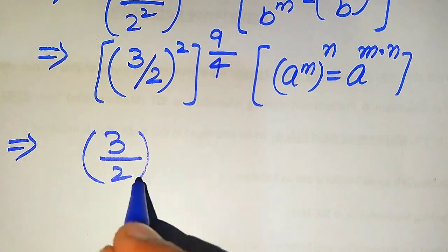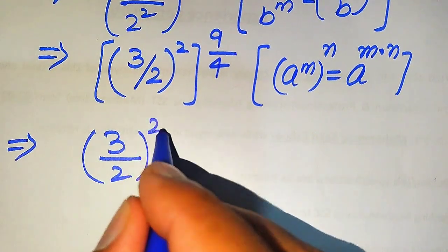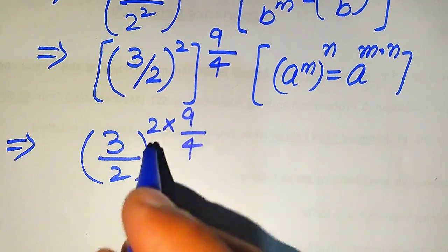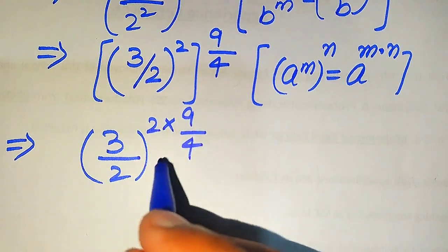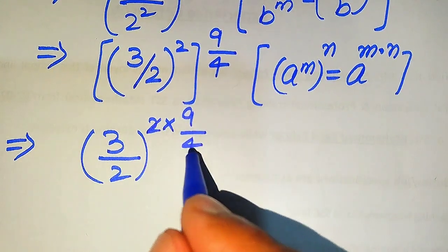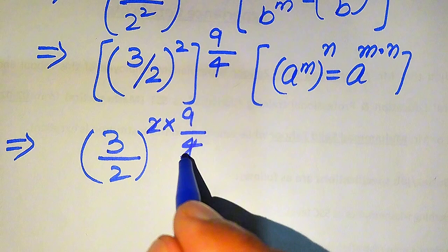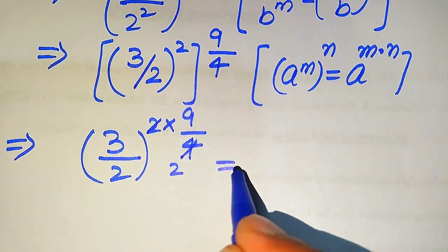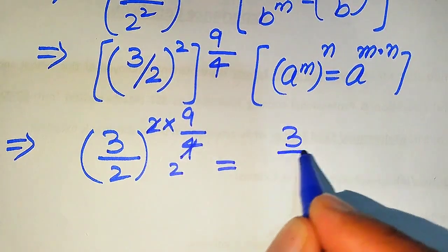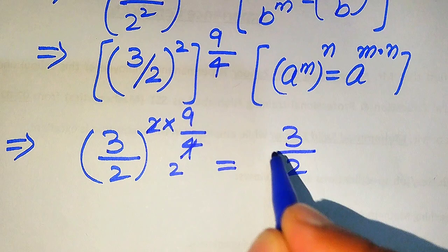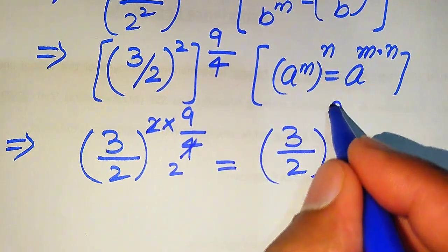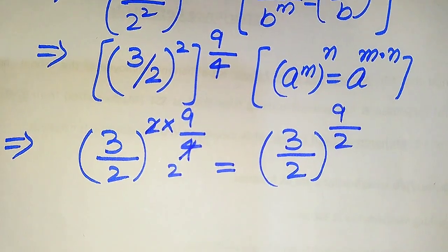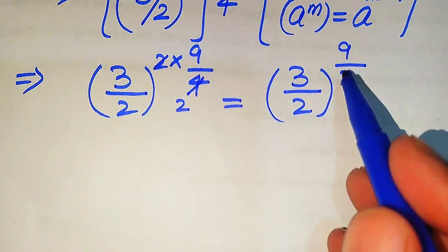When we multiply these two exponents, it will be written as 3 divided by 2, and its whole exponent is 2 multiplied by 9 over 4. Now we need simplification here: this 2 cancels, and 2 times 2 becomes 4. It will be written as (3 divided by 2) and its whole exponent is 9 over 2.